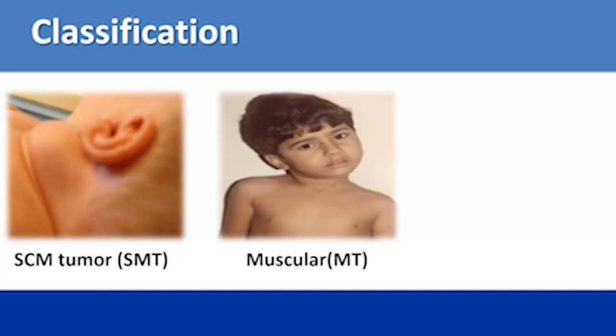Several researchers suppose that all congenital muscular torticollis cases come with fibrotic tumors, and the size of this tumor specifies its severity. So CMT is often classified into three clinical groups. The first classification is sternocleidomastoid tumor (SMT), when a definitive mass or tumor is palpable within the sternocleidomastoid muscle. The second classification is muscular torticollis (MT), when contracture of the sternocleidomastoid muscle is present but no palpable mass is present.